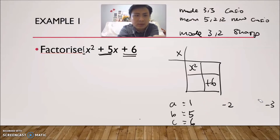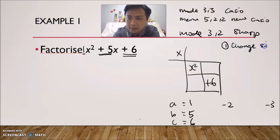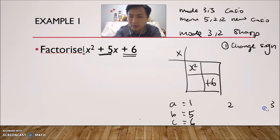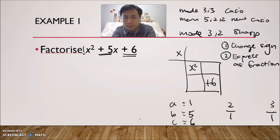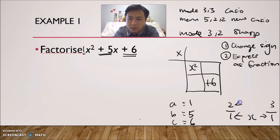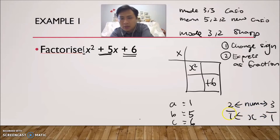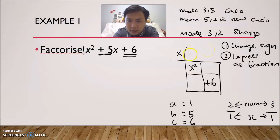Now, the first thing you do is change the sign. We have −2 and −3, so change them to positive 2 and positive 3. Second, express each as a fraction: 2 becomes 2/1, and 3 becomes 3/1. The denominator represents the x value and the numerator represents the number. So we read this as (x + 2) and (x + 3). Write these into the multiplication frame: x + 2 on one side and x + 3 on the other.